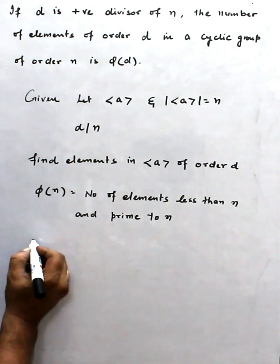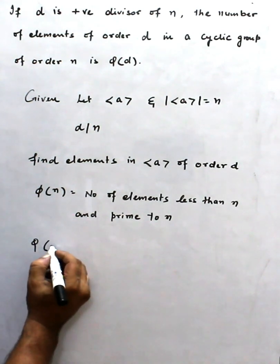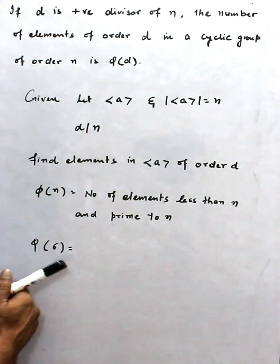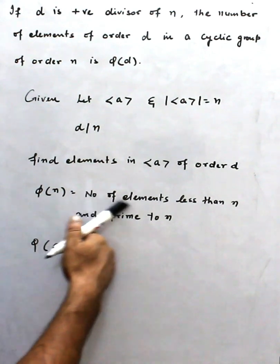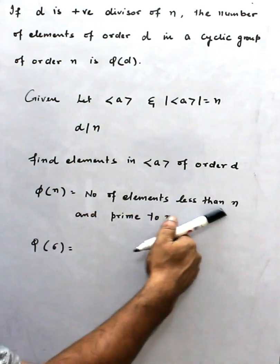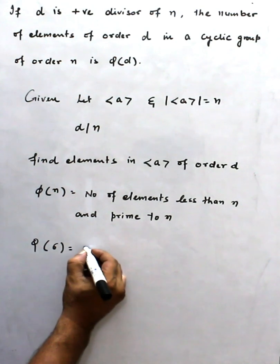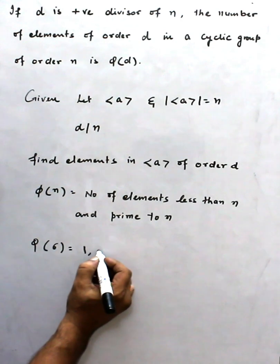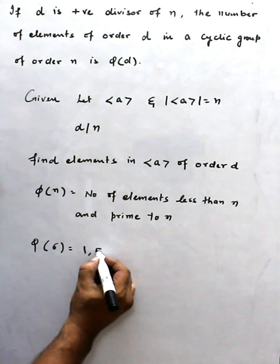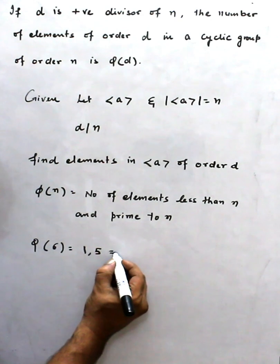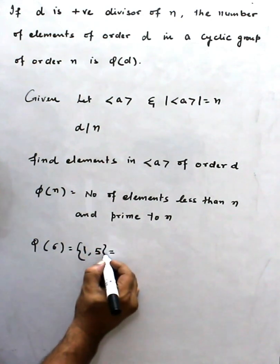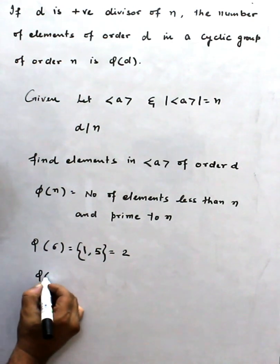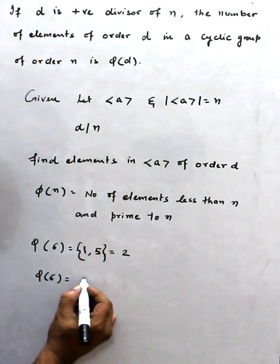That means if I take n equals 6, then the numbers which are less than n and prime to it are: first is 1, 2 is not prime, 3 is not prime, 4 is not prime, 5. That means the value is a set of 2 numbers. So φ(6) equals 2, like this.